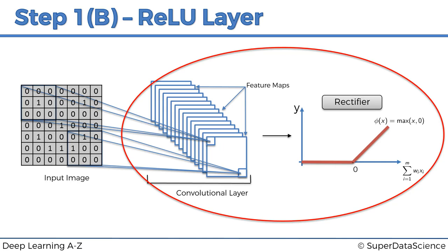The rectifier acts as a filter or function which breaks up linearity. The reason we want to increase non-linearity in our network is because images themselves are highly non-linear, especially when recognizing different objects next to each other or on backgrounds. The image is going to have lots of non-linear elements, and the transition between adjacent pixels is often going to be non-linear.